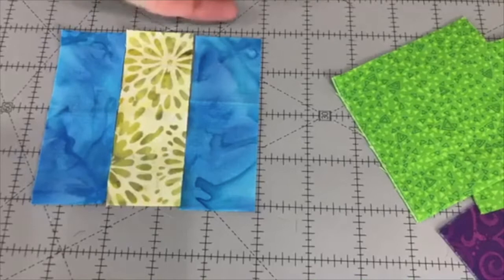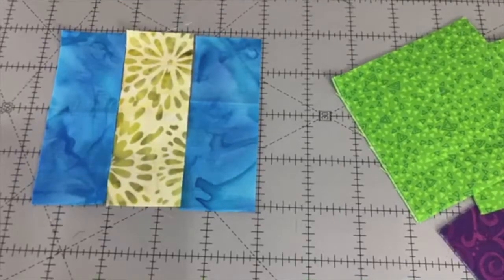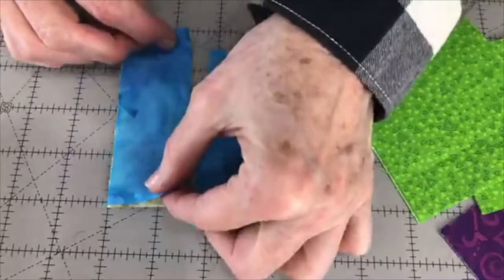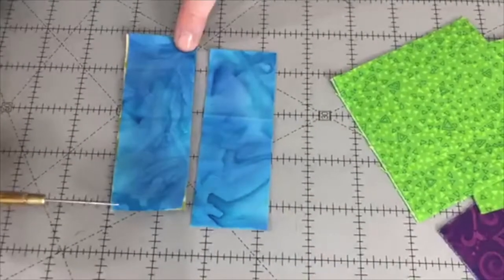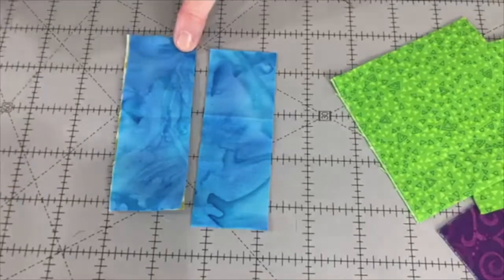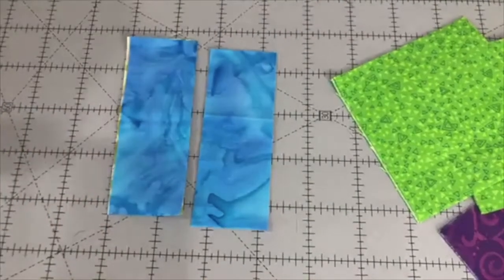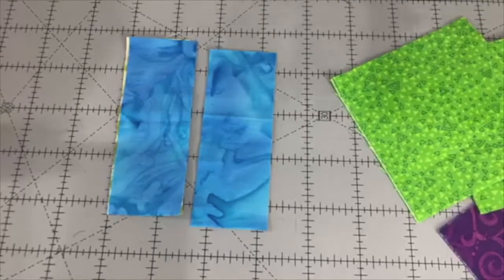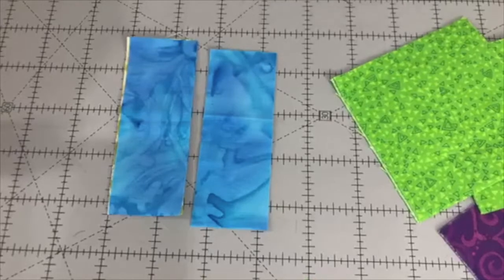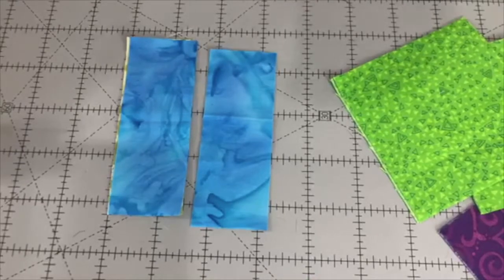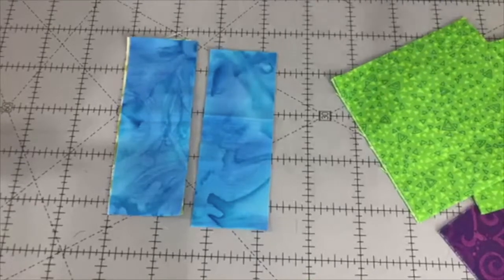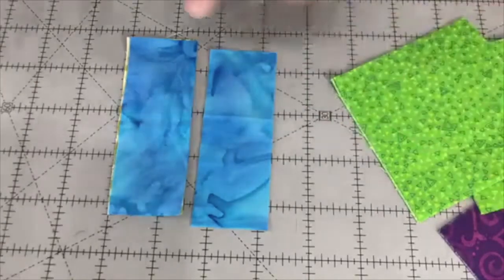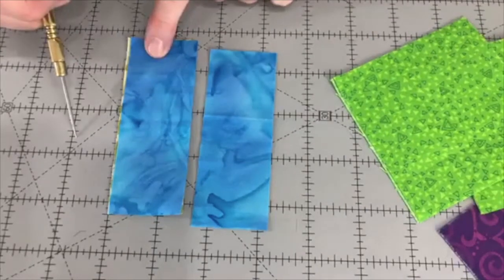And then what I do is I press away from the center piece. Now when I press, I do two things. First, I sew my two pieces together. And then I press it flat to set the seam. What does that mean? Pressing it flat to set the seam just means you're relaxing those stitches. When the stitches come out of the machine, they can tend to be a little teeny bit puckered. By pressing it flat, it just relaxes those stitches. They sink into your fabric. And then I can go ahead and press to one side.